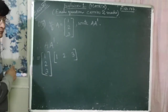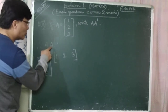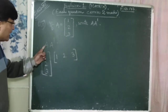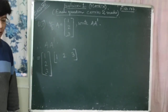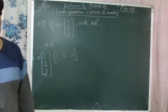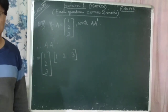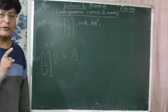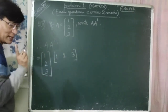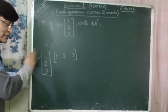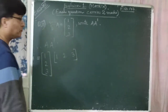Is matrix multiplication A·A dash possible? For matrix A, number of columns is 1. For matrix A dash, number of rows is 1. Since number of columns of A equals number of rows of A dash, matrix multiplication is possible. Matrix multiplication AB is possible if number of columns of A equals number of rows of B; otherwise it is not possible.